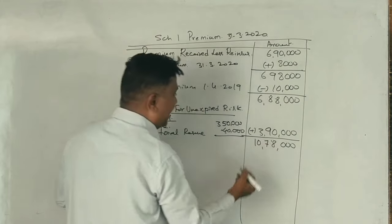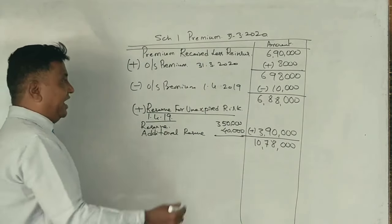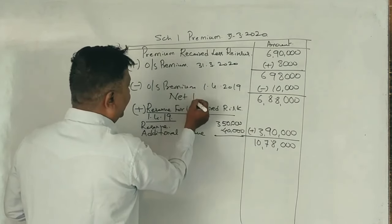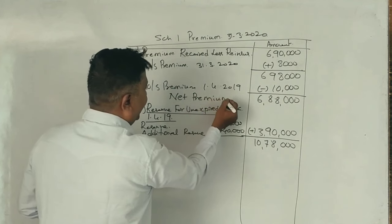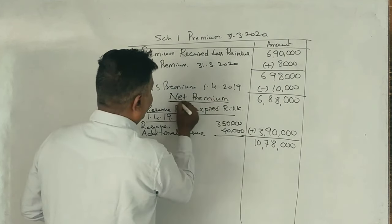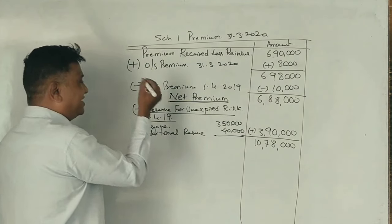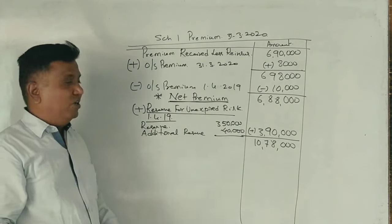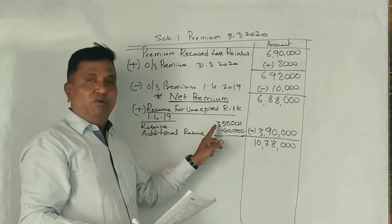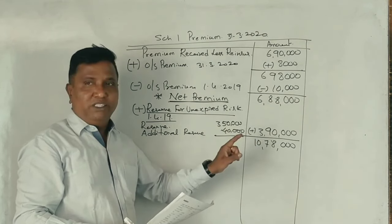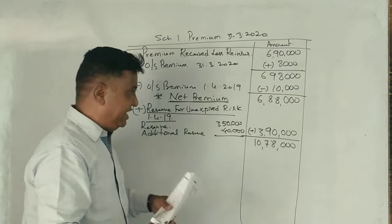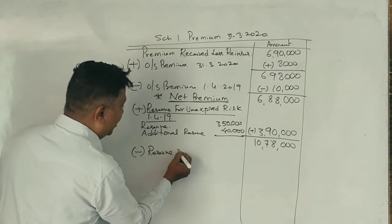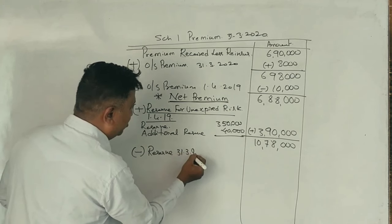The amount is 10,78,000. Add money — yes sir, the outstanding amount. This is the net premium. What we do is take the reserve. For March 2020, the net premium is calculated. The reserve amount is 3,47,400.